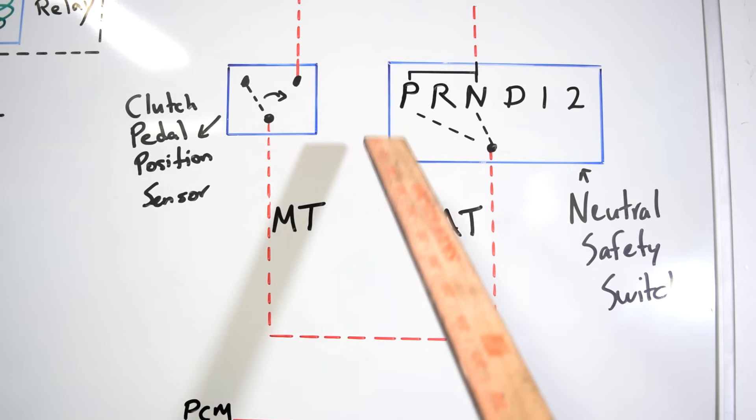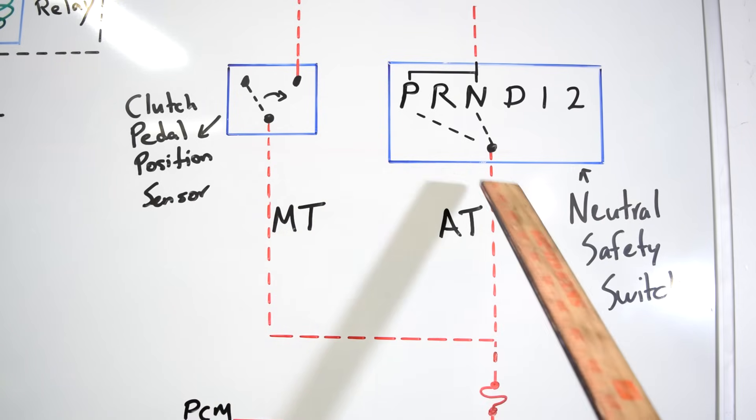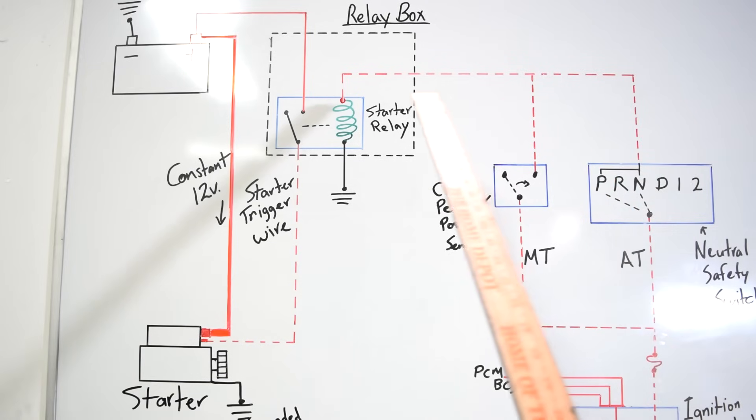This way your car can't jolt forward or back and hurt you, your car or someone else. Alright from there this will go to your starter relay which is in our relay box as we saw, and this is going to go to the control side of our starter relay. This is the side we did not bother with. We were only messing around with the switch side or the load side.